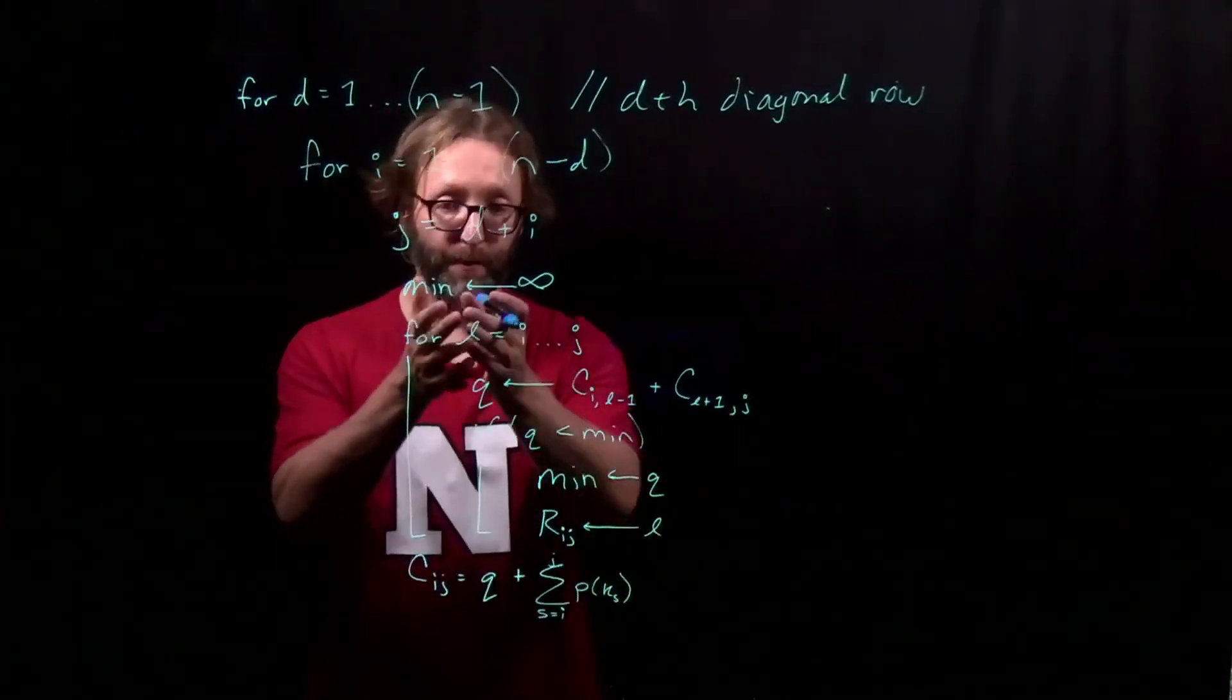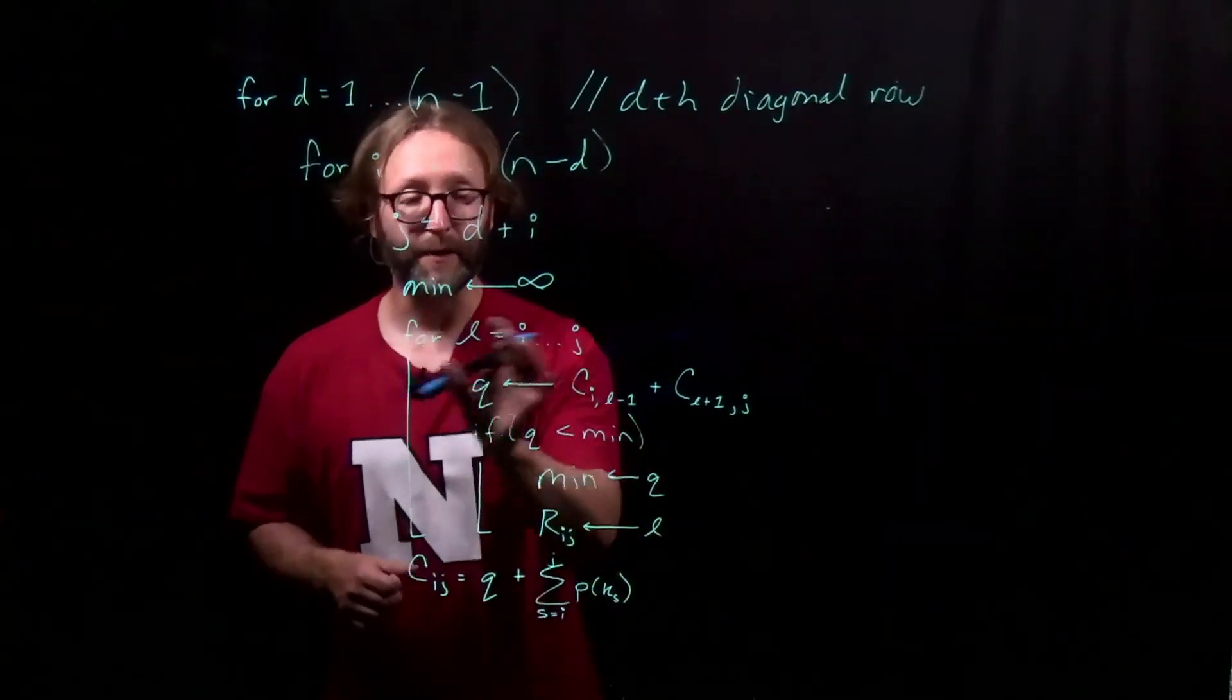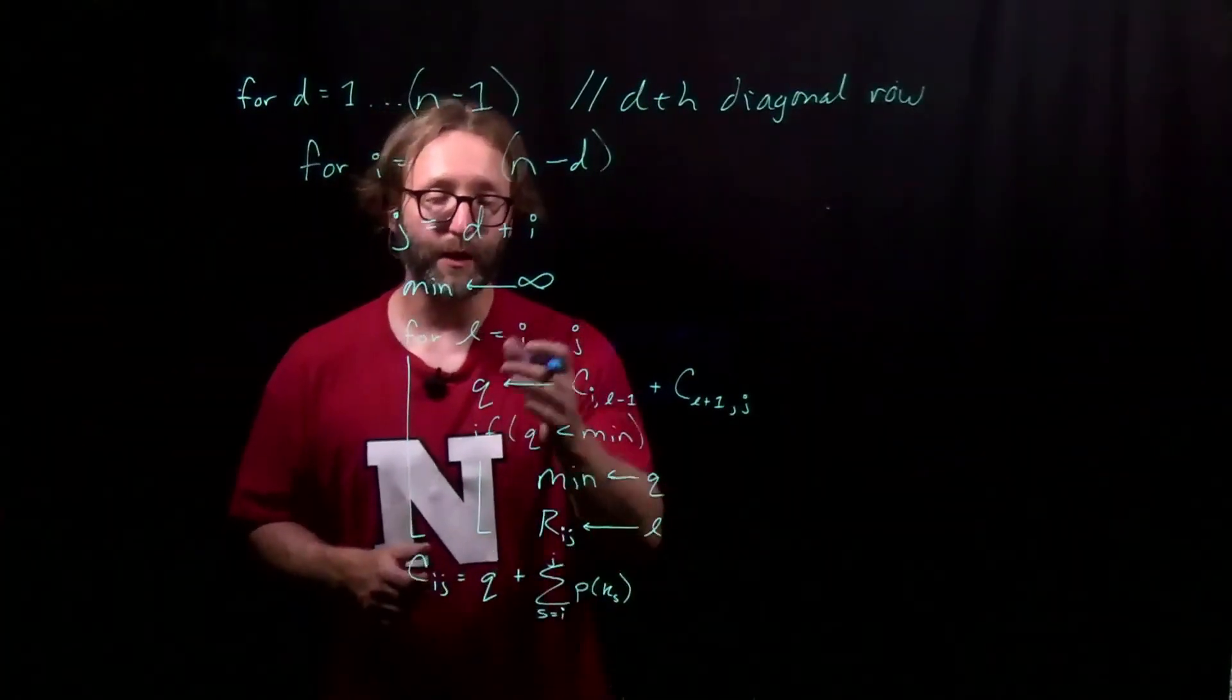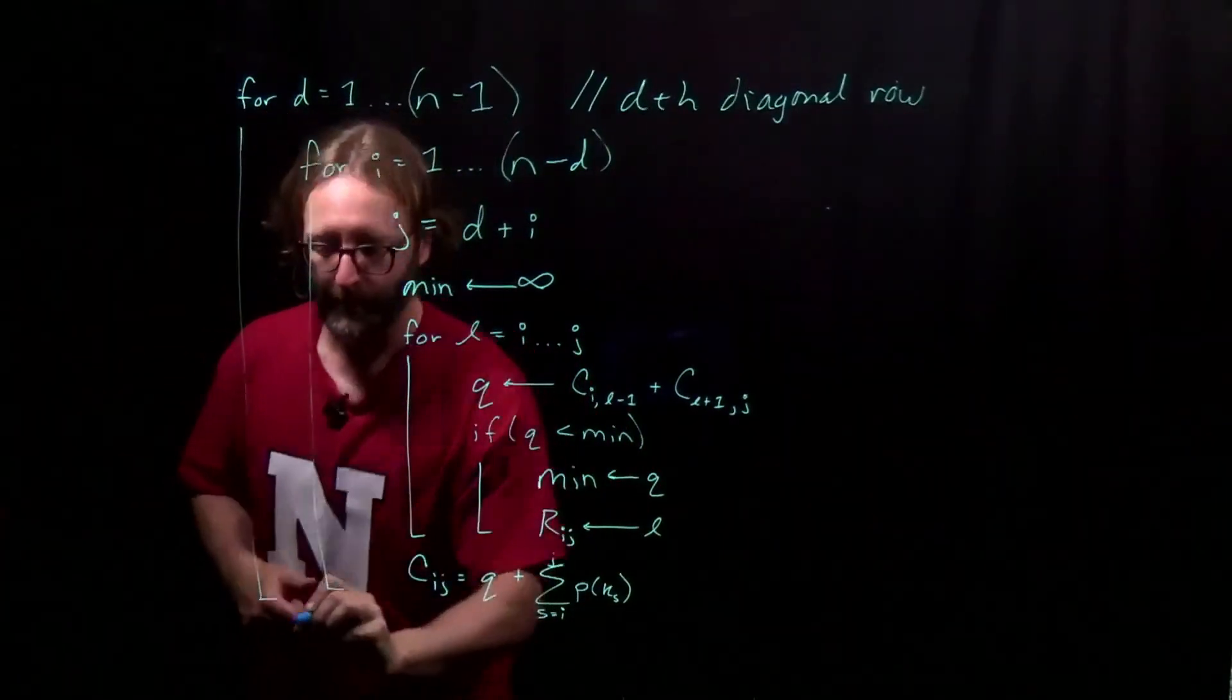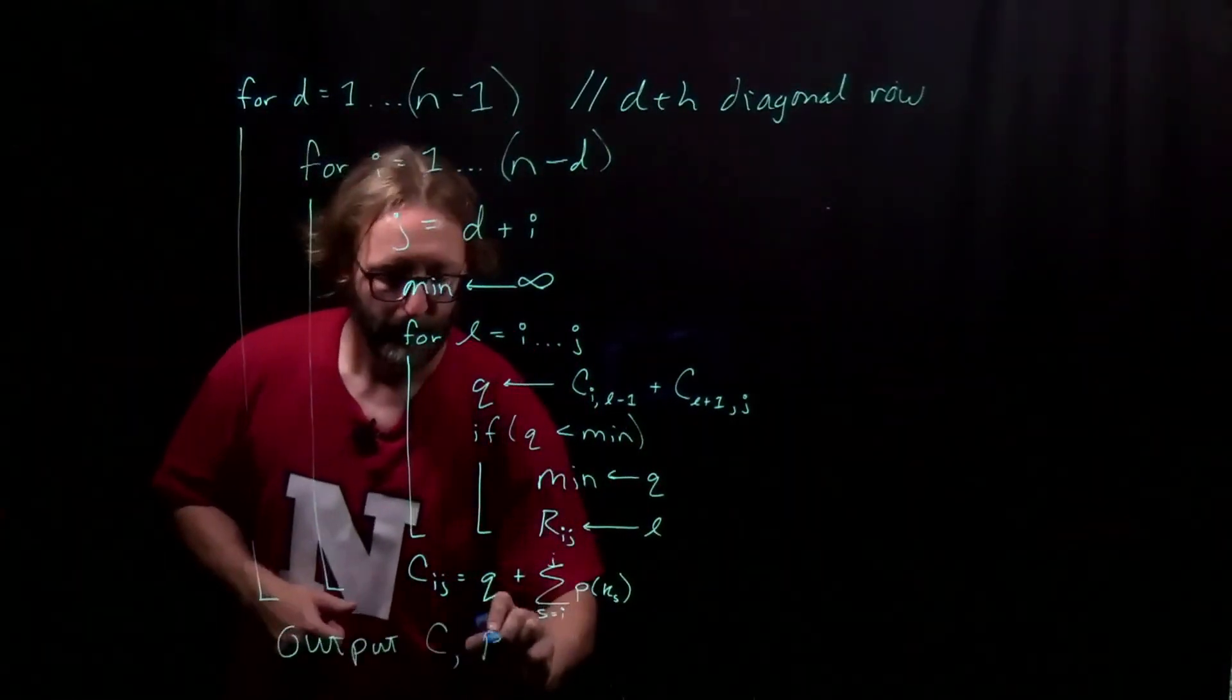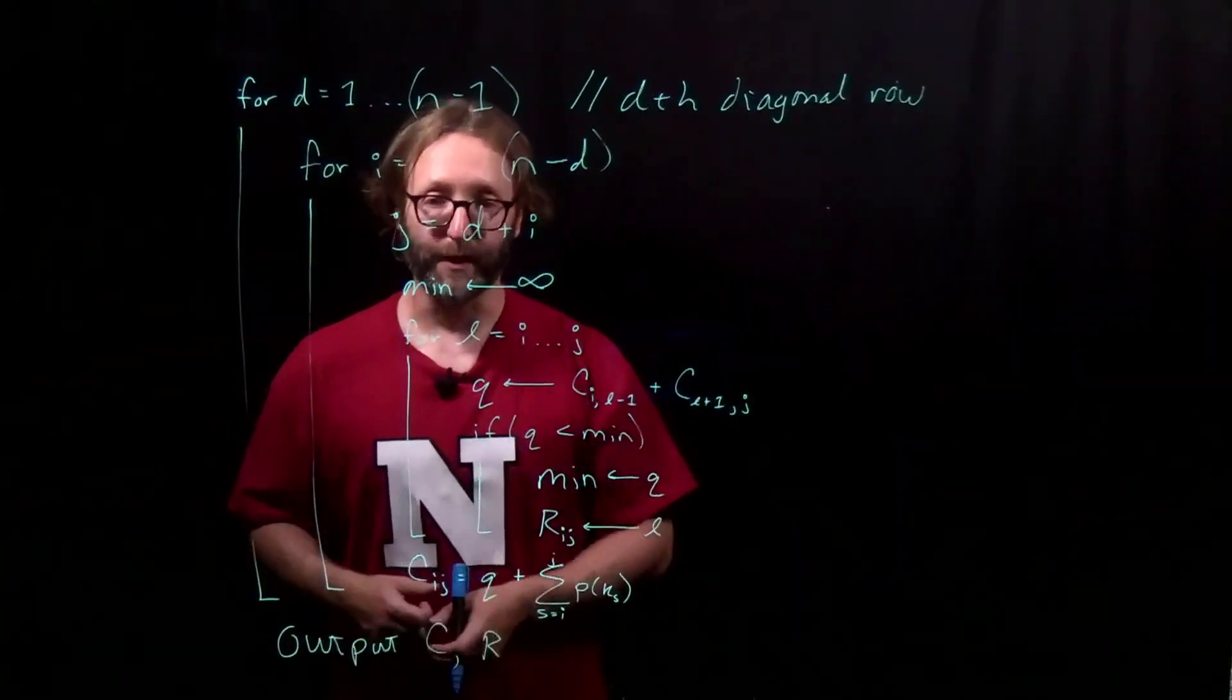That summation has no bearing on the minimum, because it would be added to any choice, and so we compute it after this for loop here. There's no need to do it inside the for loop. All we need to do in the end is output our cost table and the root table.